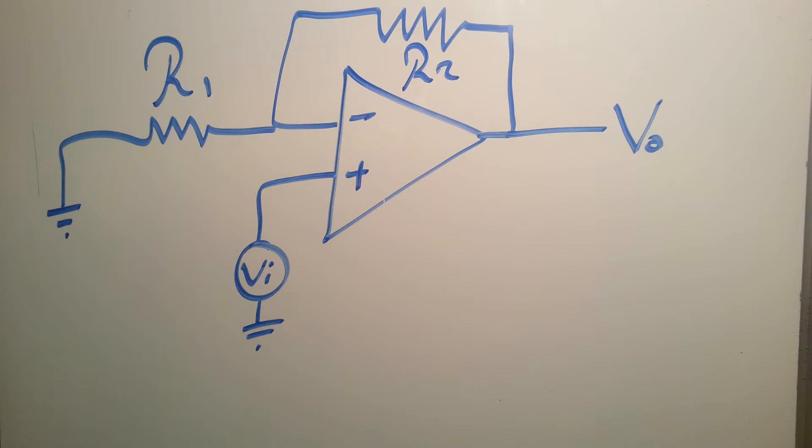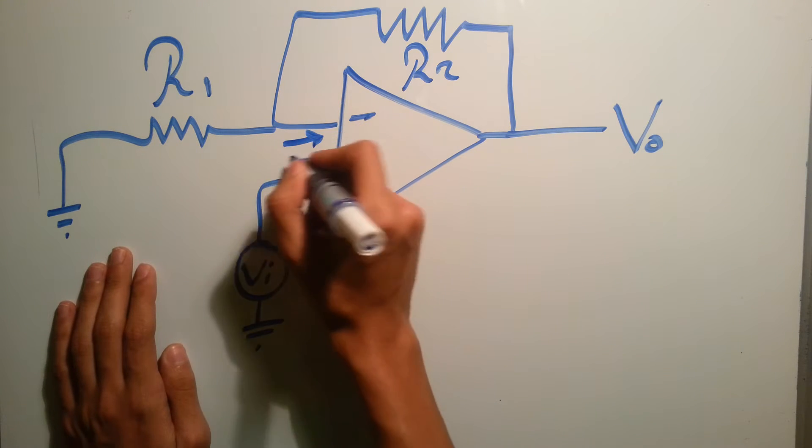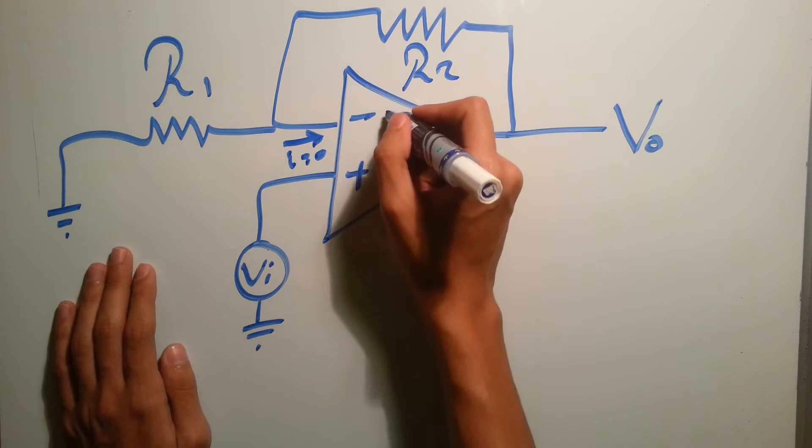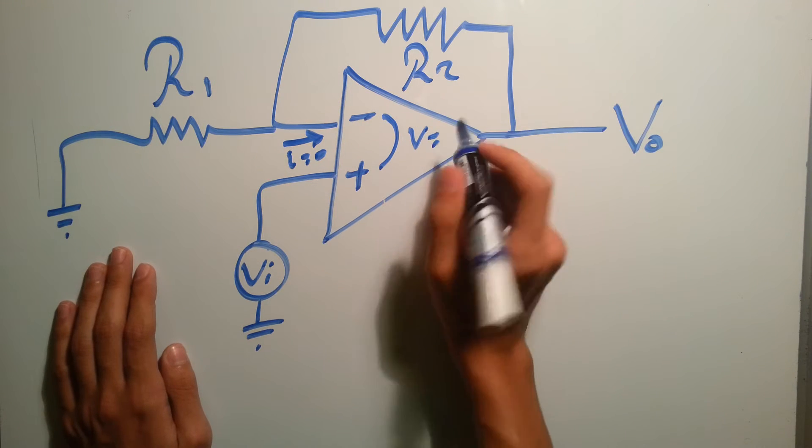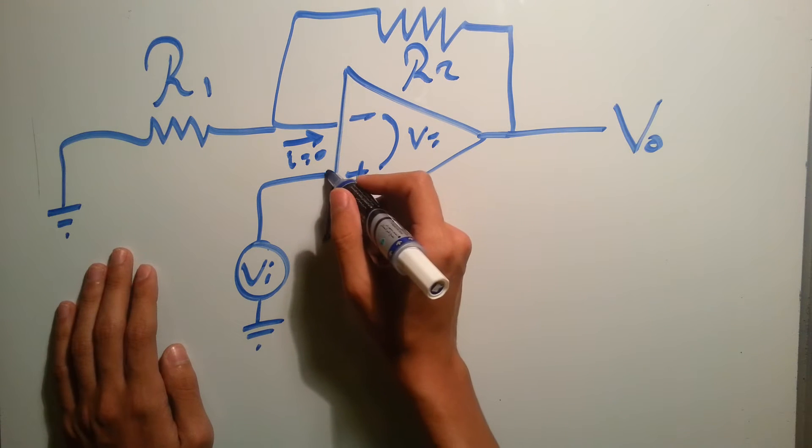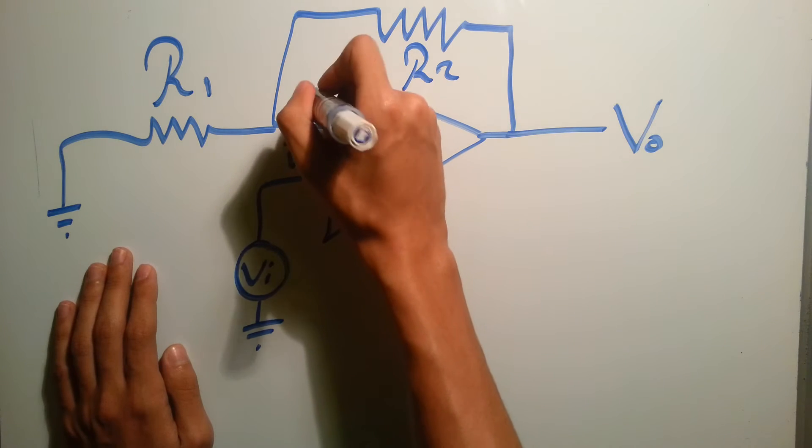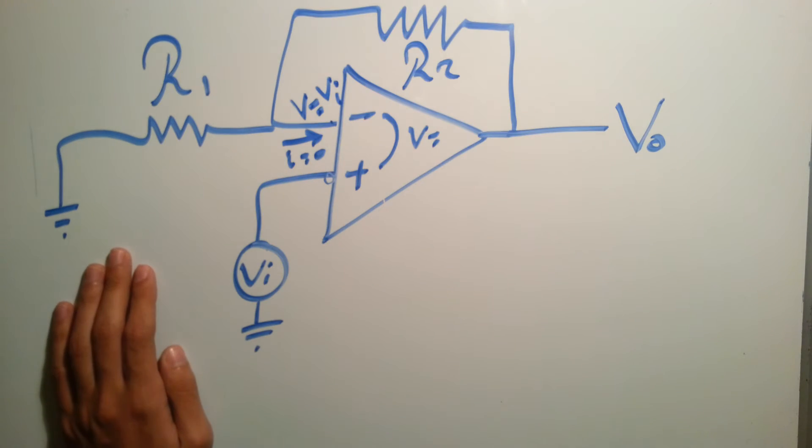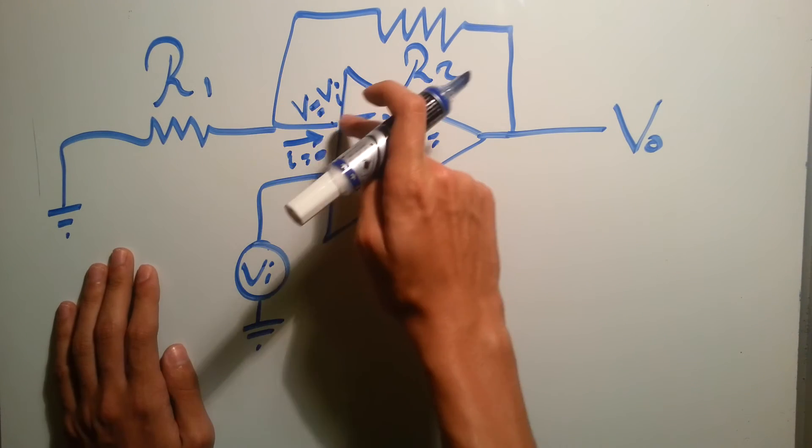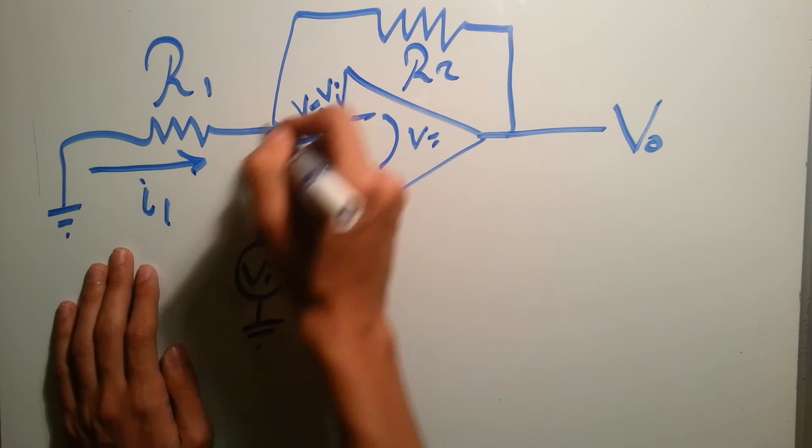If you watched the previous video, you'd know that the current here equals zero and that the voltage here is the same. So we have on this node VI. Definitely the voltage here equals VI too. Since we have no current over here, then this current I1 will equal the current I2.